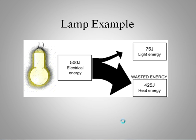Let's take our lamp example here. If we have 500 joules of energy coming in, we get 75 joules of light energy coming out. What's that efficiency? This is what we want, so this is the output. Here's our input. Output to input is 0.15 or 15 percent efficient.